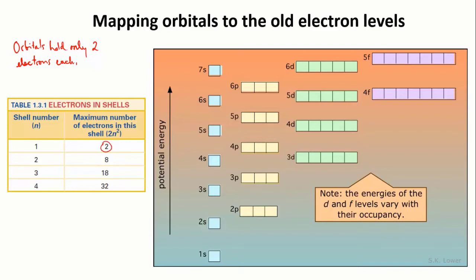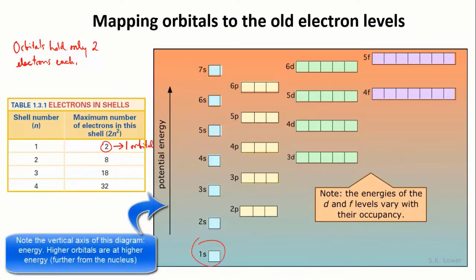Level 1 could hold a maximum of two electrons, so it only has one orbital. This is known as the 1s orbital. 1 tells you the energy level, it's the first energy level, and s tells you the type of orbital.